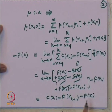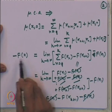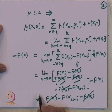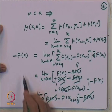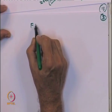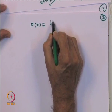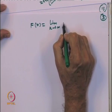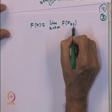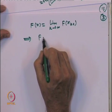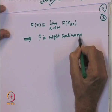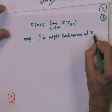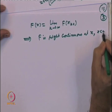Substituting back, the f(x_1) terms cancel in the full equation, and with the limit, we obtain f(x) equals the limit as k goes to infinity of f(x_{k+1}). This proves that f is right continuous at x in the case when x is less than 0, and hence f is right continuous for every x in R.